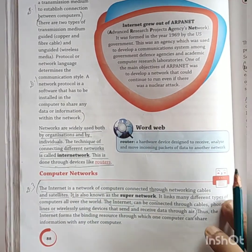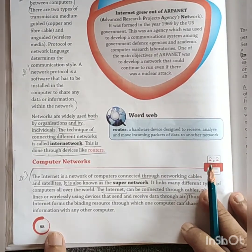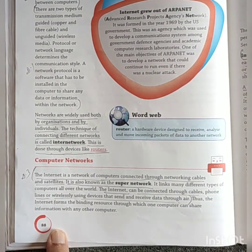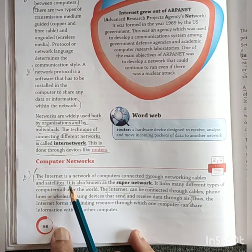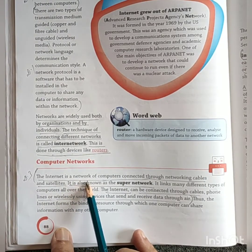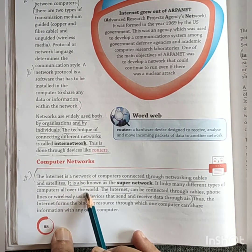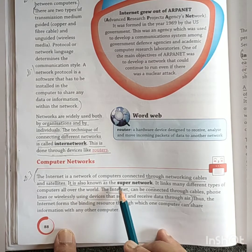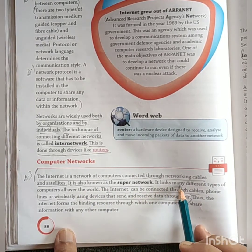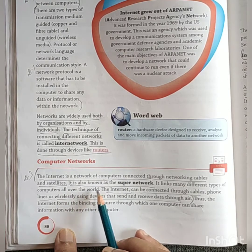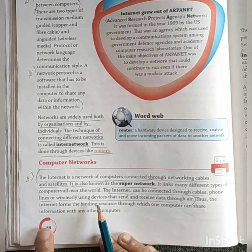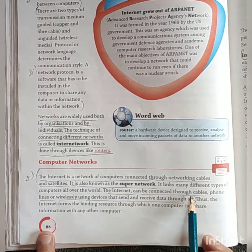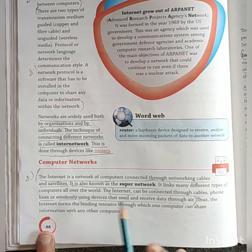In computer network, the term internet has come. Internet is a network of computers connected through networking cables and satellites. Internet means it is a connection of computers; it is also called network of networks. It links many different types of computers all over the world. The internet can be connected through cable, phone lines, or wirelessly.